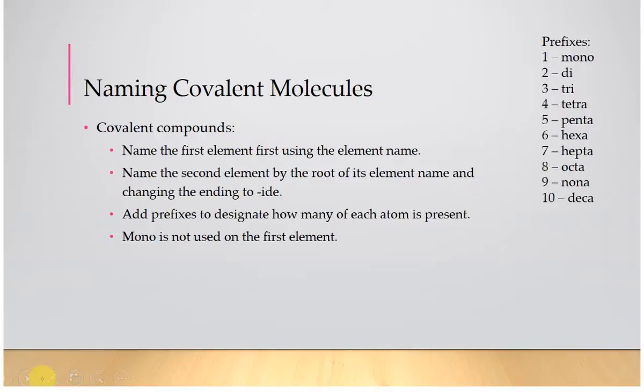So the prefixes are here. These are not always intuitive unless you are a math person. One means, if you have one of them, you would use the prefix mono, like carbon monoxide. Two is di. Three is tri. Four is tetra. Five is penta. Six is hexa. Hexagon, pentagon.